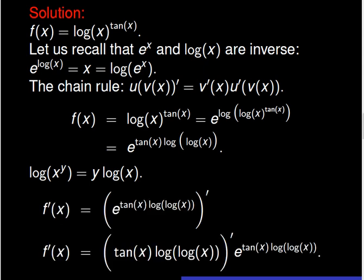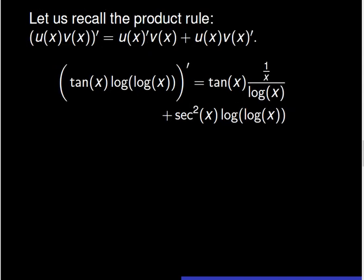Now we can take the derivative of both sides and use the chain rule. Using the chain rule, the derivative of f is equal to the derivative of the product tangent of x times logarithm of logarithm of x, times the exponential of the product tangent of x times the logarithm of logarithm of x. In order to compute this, we need to use the product rule.